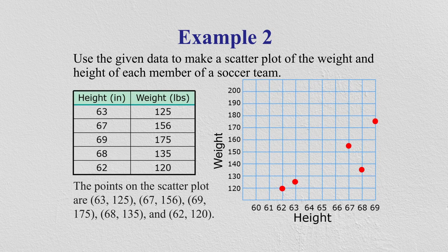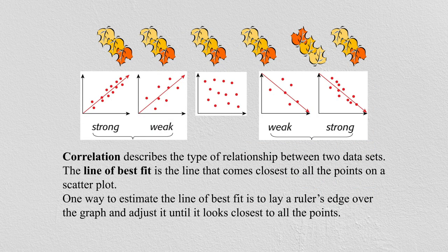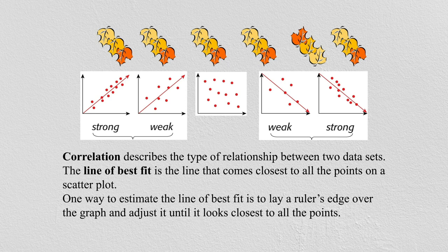Correlation describes the type of relationship between two data sets. If there is a strong relationship between the two, you will find that the movement of one is going to affect the movement of another — the more the height, the more the weight. If you talk about weak correlation, this is how it appears. And no relationship between the two means it is called no correlation. So weak and strong are distinguished clearly.